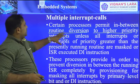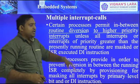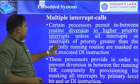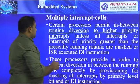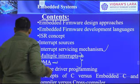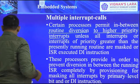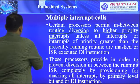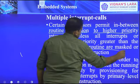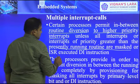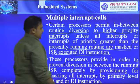In-between routine diversion to higher priority interrupts is allowed unless all interrupts of priority greater than the presently running routine are masked, or disabled using the DI instruction — disable interrupt. When DI equals 1, interrupts are disabled and no input will be accepted.